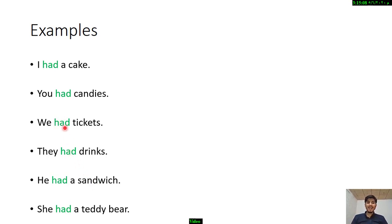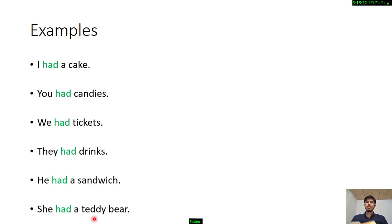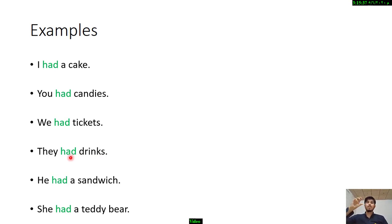For 'We had tickets' and 'She had a teddy bear,' it means they owned something — for example, yesterday we had three tickets, meaning you owned them. And 'They had drinks' means they drank something — for example, they drank a bottle of water, juice, or lemonade.